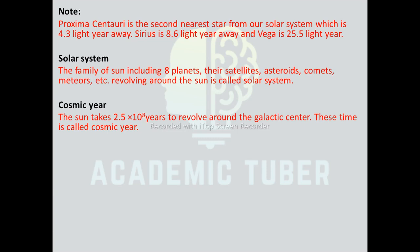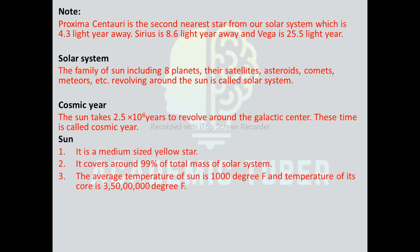Cosmic year: the Sun takes 2.5×10⁸ years to revolve around the galactic center, and this time is called the cosmic year. The Sun lies in the middle of our solar system and keeps all the family members around it due to its huge gravity. Its mass is 740 times greater than the sum of the masses of all planets. It is a medium-sized star and seems bigger than other stars because it is nearer to Earth, about 1.5×10¹¹ meters away. The average density of the Sun is 1.5 times more than that of water.